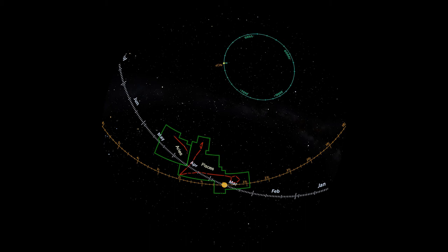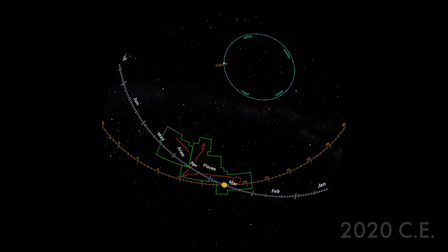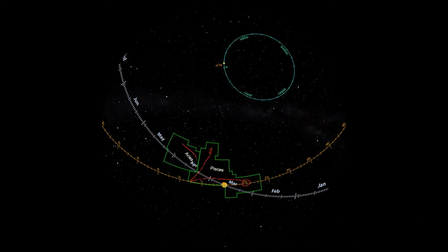It takes 26,000 years for the Earth to complete one wobble. This motion is called precession. It's so slight that over a human lifetime, you won't notice any changes.